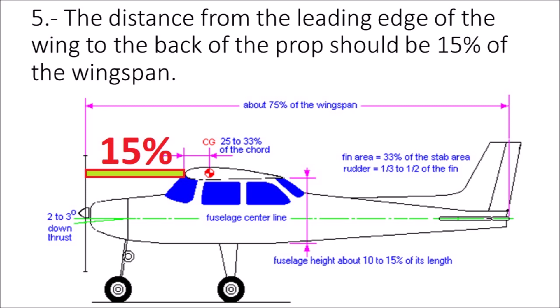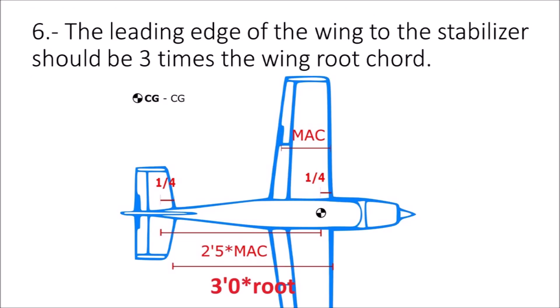The distance from the leading edge of the wing to the back of the propeller should be 15% of the wingspan. The leading edge of the wing to the stabilizer should be 3 times the wing root chord.